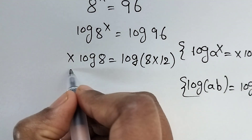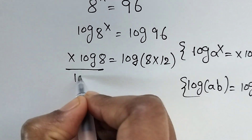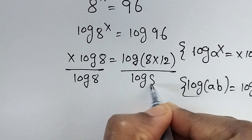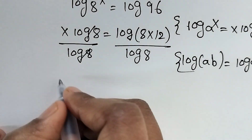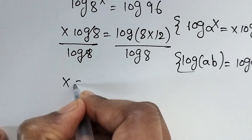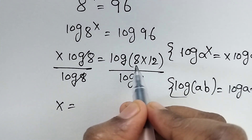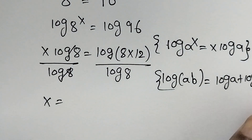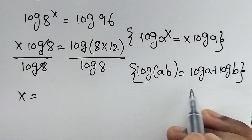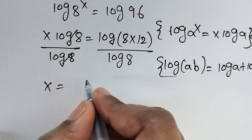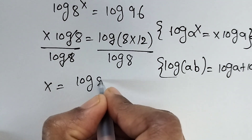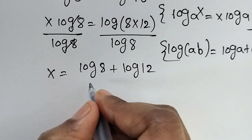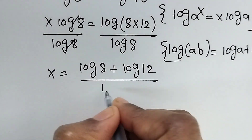So use this formula. First divide by log 8. So here we have log 8 plus log 12, divided by log 8.